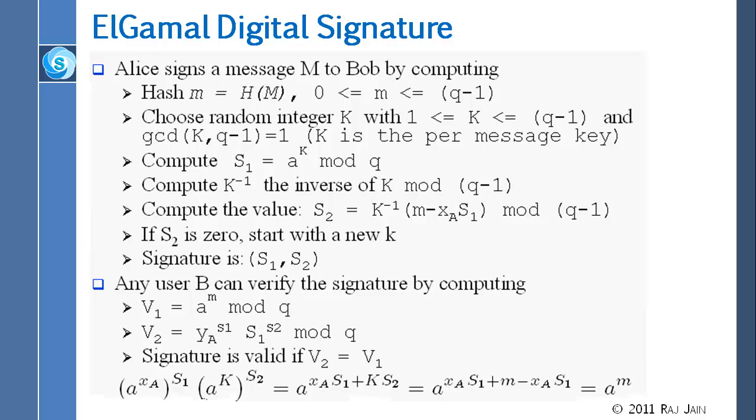And then you use K to compute K inverse. And you send both of them. And at the other end, if they calculate V1 and V2, where V1 is a raised to M mod Q and V2 is this, then if they are two together and they are equal, then the signature is valid.